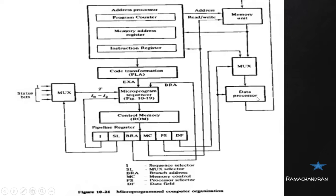The data processor and address processor are separate, though sometimes they are kept as a single unit. The advantage of keeping them separate is that we can use separate sets of wires for transferring address information and data.